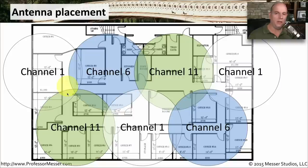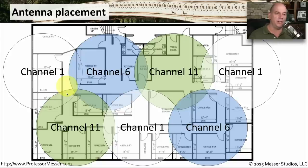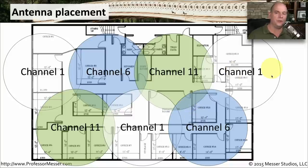In that case, you can have a large number of access points, as long as you remember not to have frequencies that are going to conflict with each other. So you might want to use channels one, six, and eleven here in the United States, and create a layered set of frequencies that will not create any conflicts between any of them.